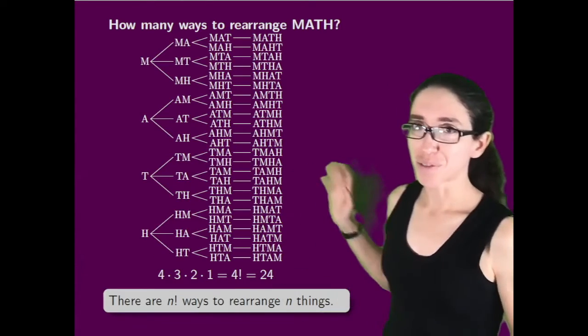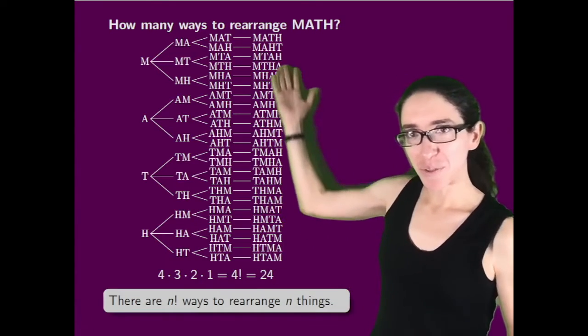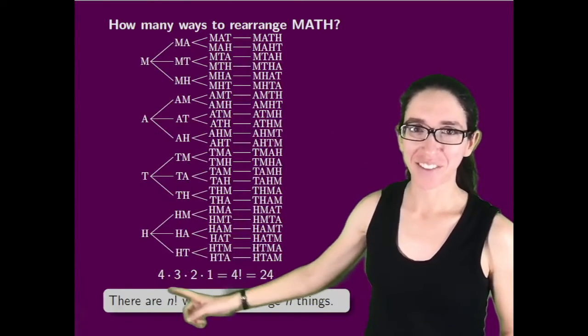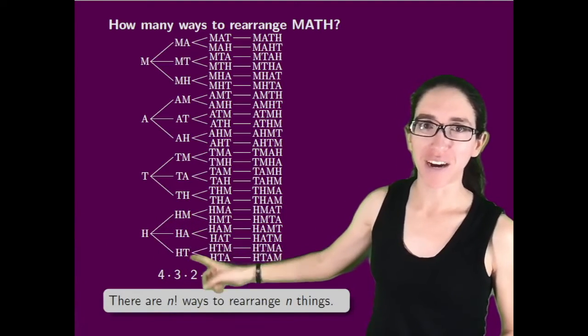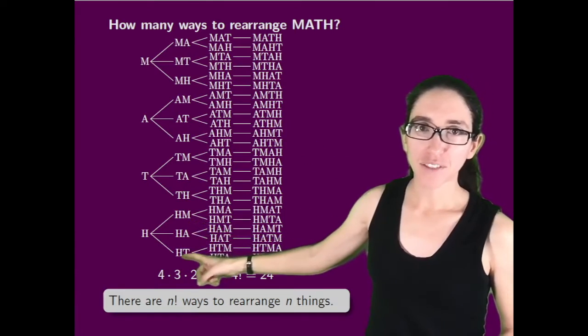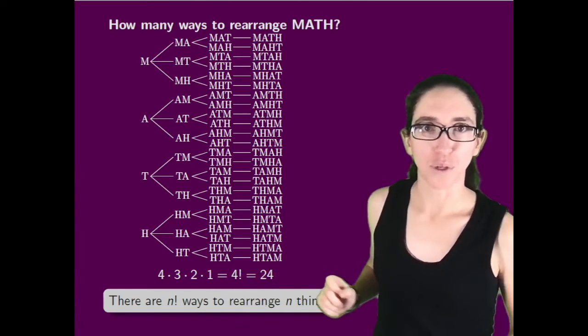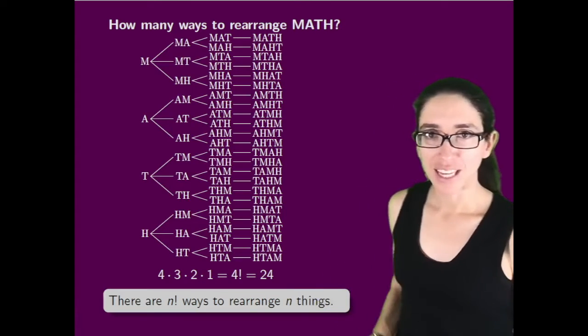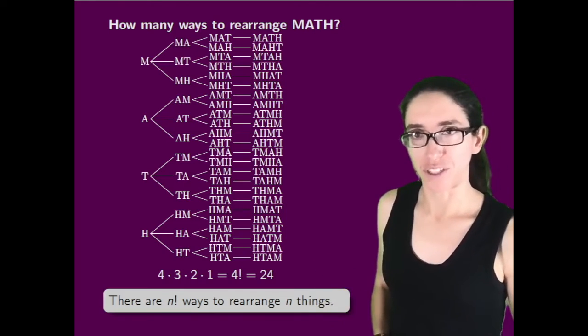This generalizes to any number of letters. How many ways can we rearrange the letters in the word math? Now there's four ways to choose the first letter. For each of those letters, there's three different letters we can put after it, so we have four times three ways to get to the second column. For each of those choices, there's two ways to add the third letter, and then one way to complete the word. So we end up with four factorial, or 24, ways of rearranging the word math. In general, there are n factorial ways to rearrange n things.